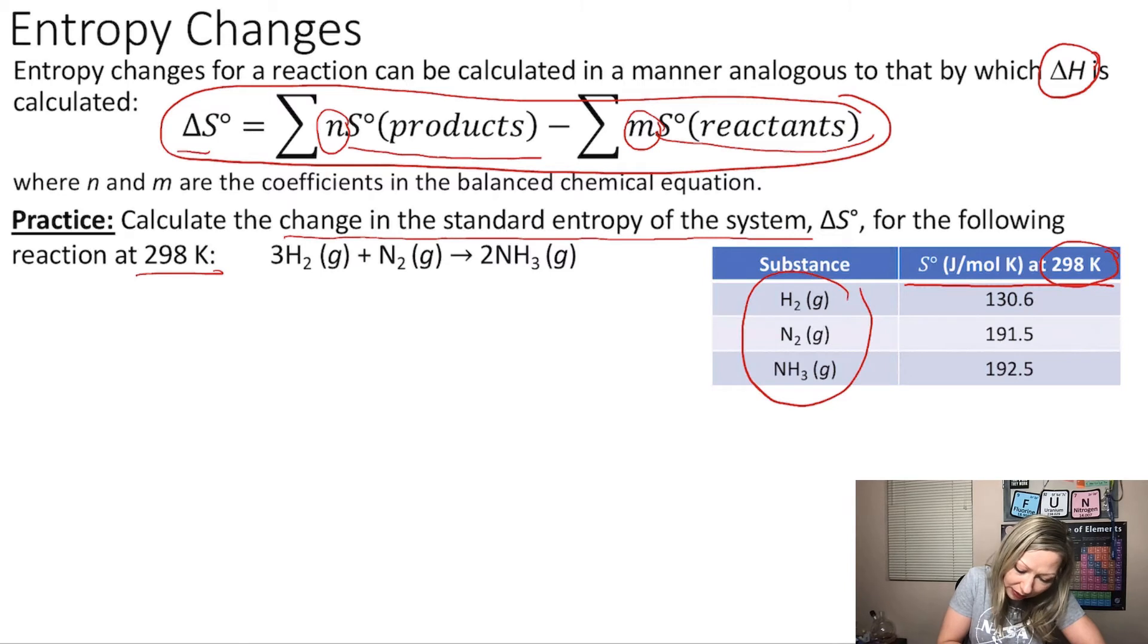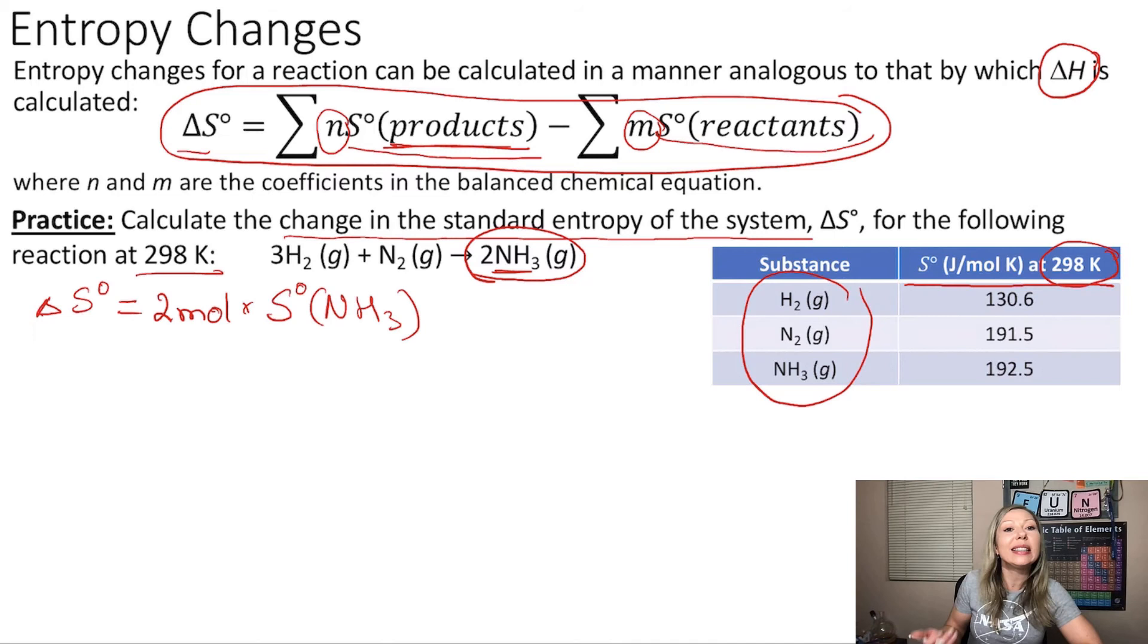So if we use the following formula up here, we are going to see that the standard change in entropy for the reaction equals, first we need to look at the products, we have 2 moles of ammonia here. So 2 moles multiplied by the standard entropy for NH3, right? And this is our only product, minus the sum of the standard entropies of the reactants times the moles.